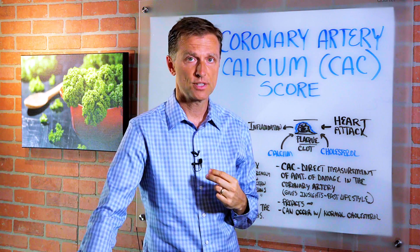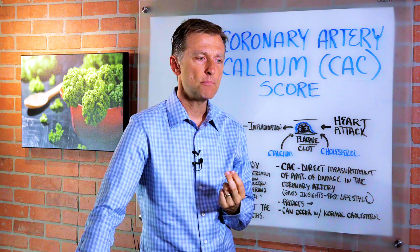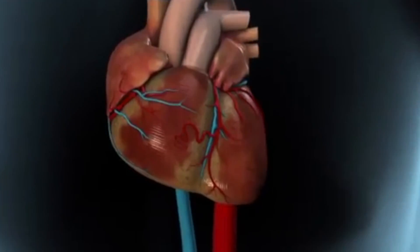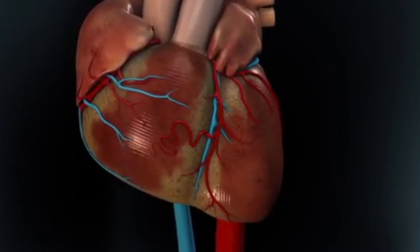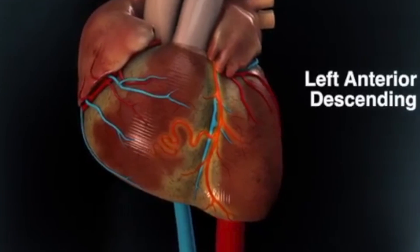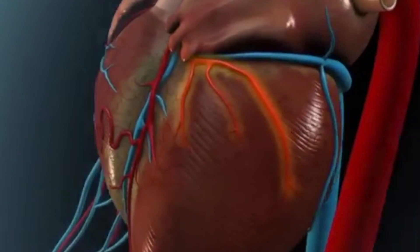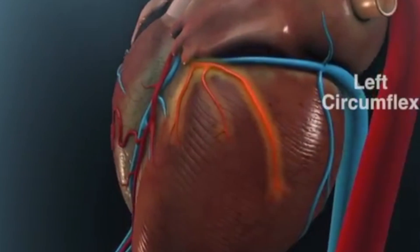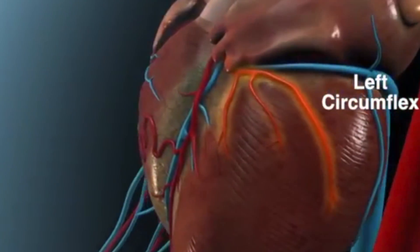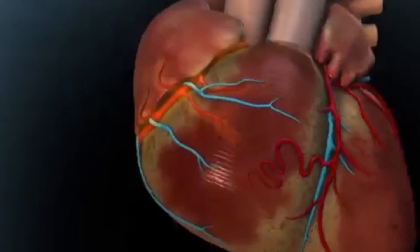First of all, what is the coronary artery? It's the main artery that supplies blood flow to the heart muscle. So when you have a heart attack, it's really that artery that becomes obstructed, which starves off oxygen and blood flow to the heart muscle, and it cramps and you get a heart attack and you die.